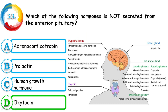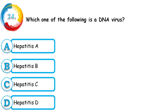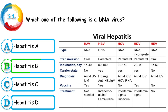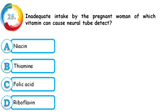Question 24: Which of the following is a DNA virus — hepatitis A, hepatitis B, hepatitis C, or hepatitis D? The correct answer is hepatitis B — it is the only type of hepatitis with a DNA virus. All remaining types of hepatitis are RNA viruses. In the table you can see various other information related to hepatitis disorders.